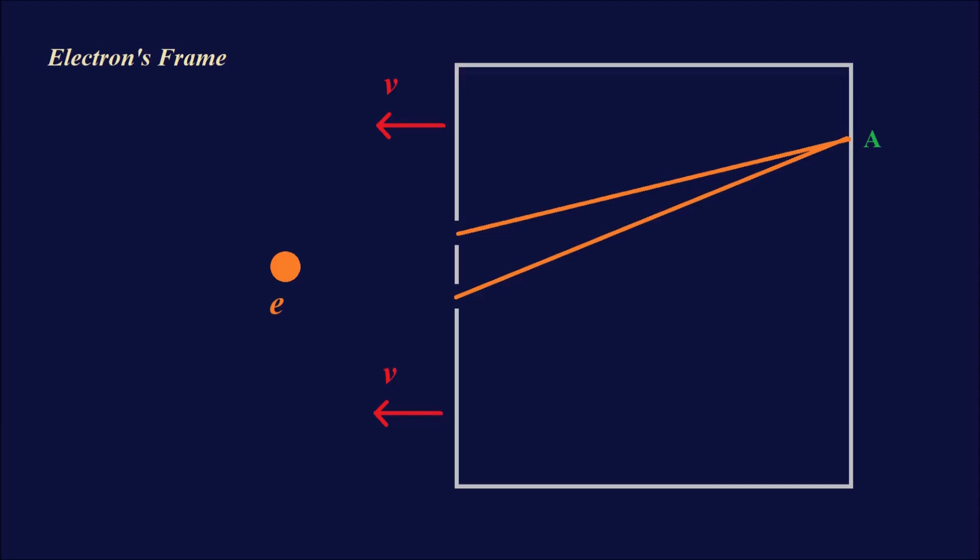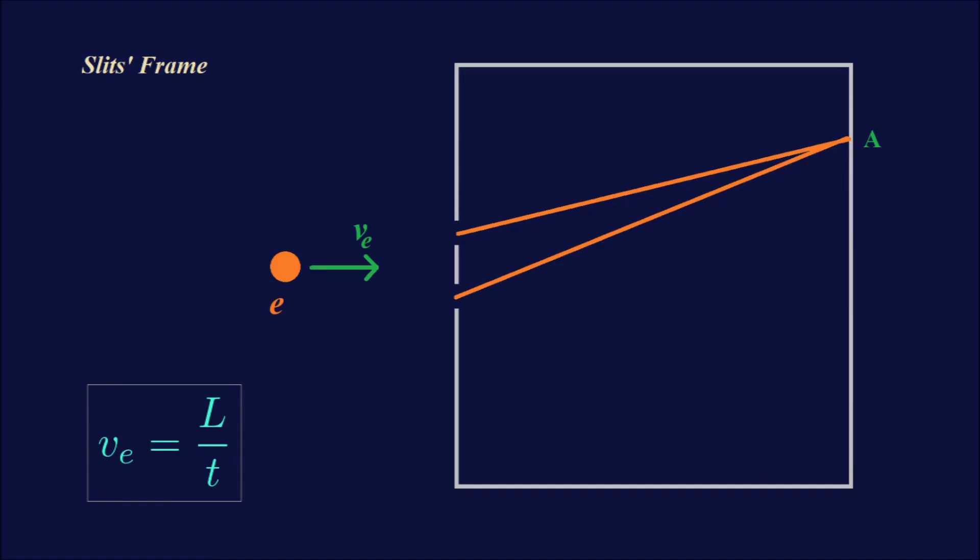If it doesn't have a vertical velocity component, it will reach the center of the screen without deflection. In the frame of reference of the slits, the slits are not moving. Our task is to show that the interference pattern is the same in all frames of reference.